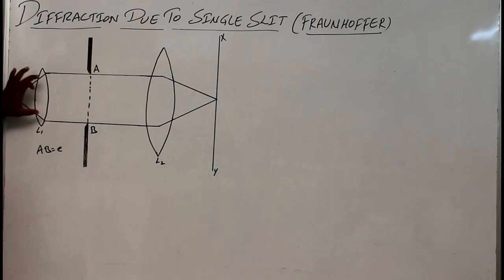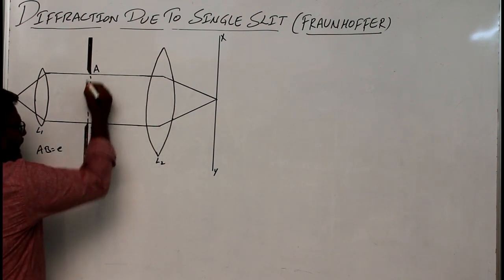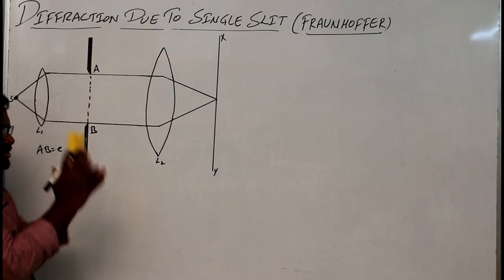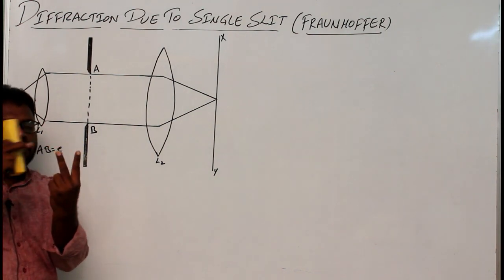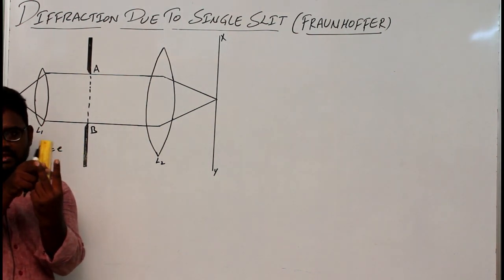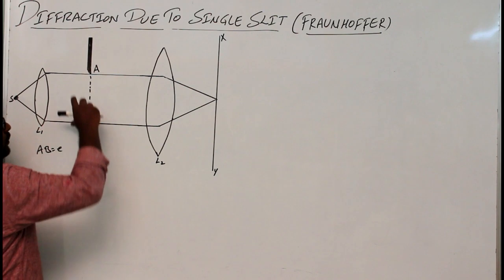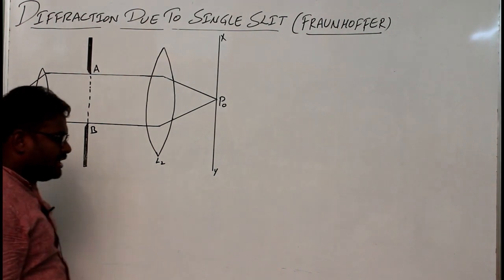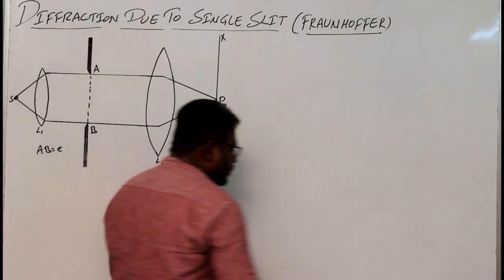Consider a source S, with lenses L1 and L2. Whenever light falls on the lens it travels parallel after passing through. The light rays traveling through the gap — some light passes through the narrow gap. Light that hits the edges bends and travels. The light rays traveling without deviation will focus at the center of the screen, called P0, since they are traveling without deviation, forming a maximum intensity at the screen.